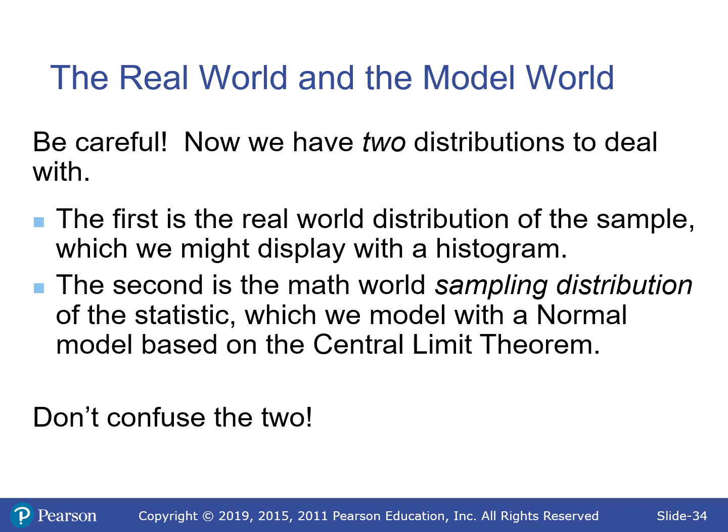Don't confuse the two. For a distribution of a sample, you generally know all the individual data points. For a sampling distribution, you generally know just the mean or proportion, the sample size, and the standard deviation — just those few pieces.